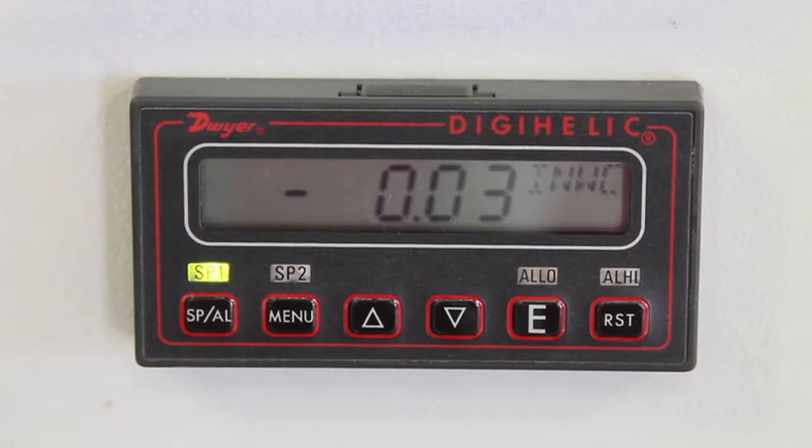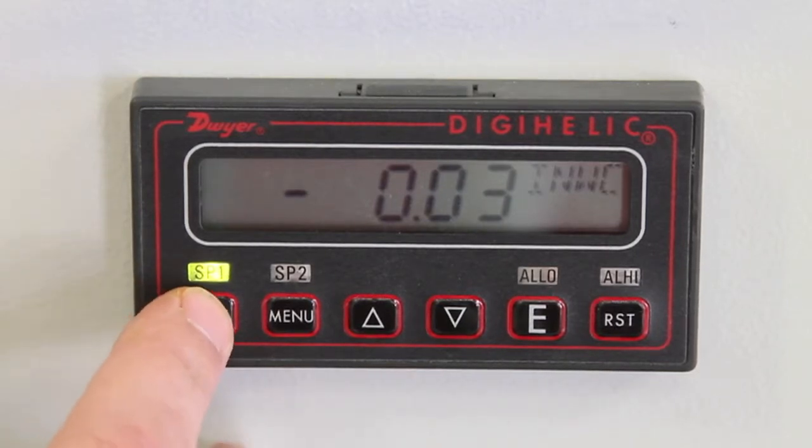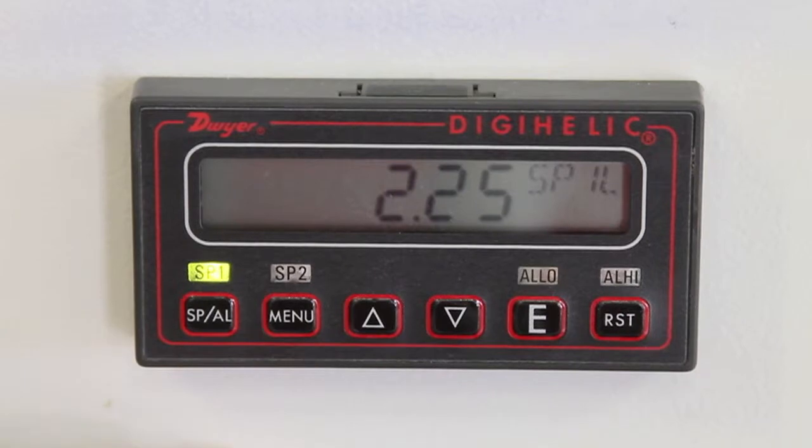Our first step is to review the high, low, and alarm set points and make sure they are to factory set points. To do so, we'll push the SPAL button. It will bring up 2.25 SP1L. This varies by model. Check your owner's manual to see what yours should be.